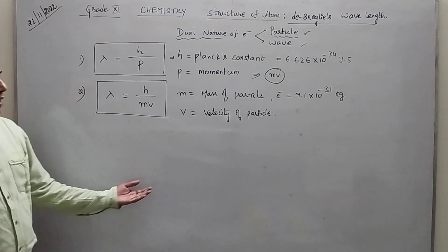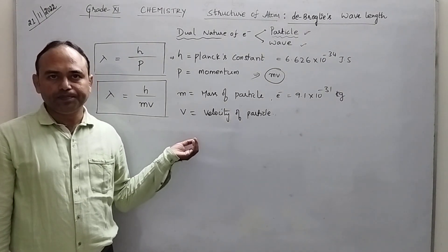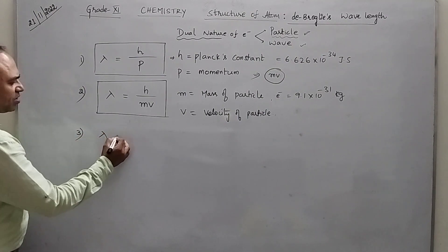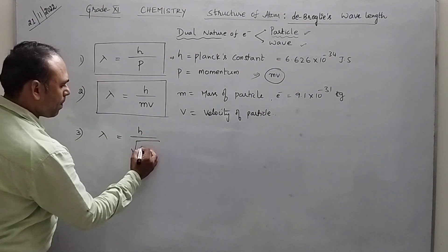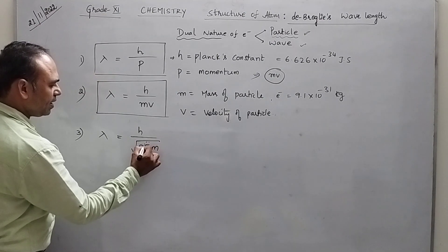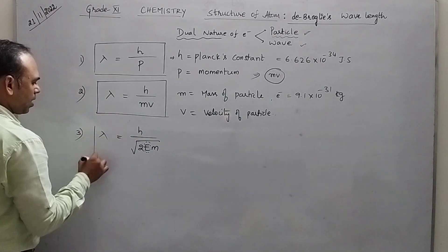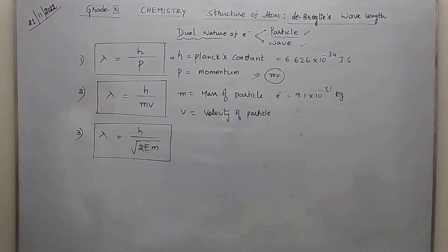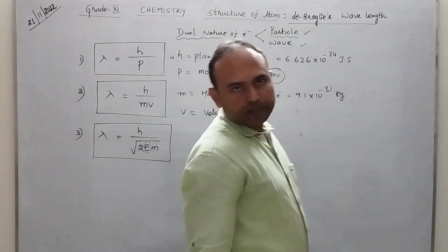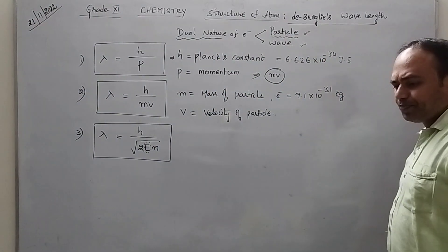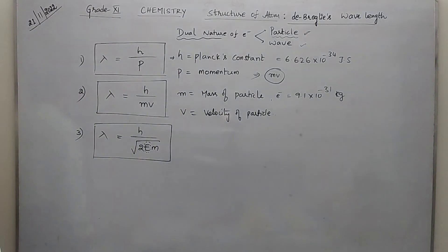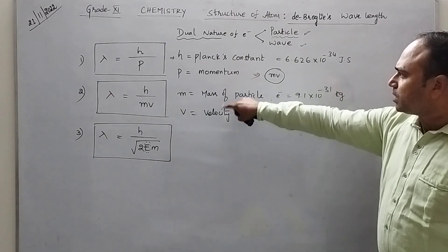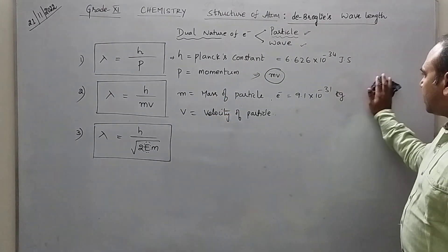Now one more thing is, if it moves with some kinetic energy, how do you derive that? Let us see the third one — the relation between kinetic energy E and wavelength lambda. So lambda is equal to H by root of 2EM. So H is Planck's constant, P is momentum, M is mass, and V is velocity of the particle.